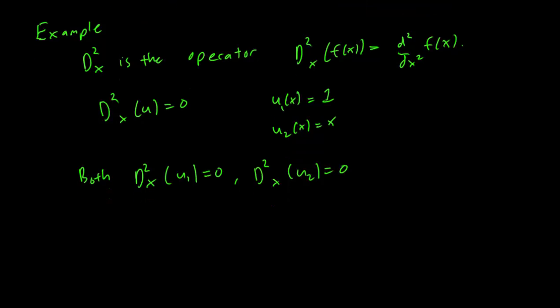So by superposition, we should get D²ₓ(C₁u₁ + C₂u₂) = 0 as well.